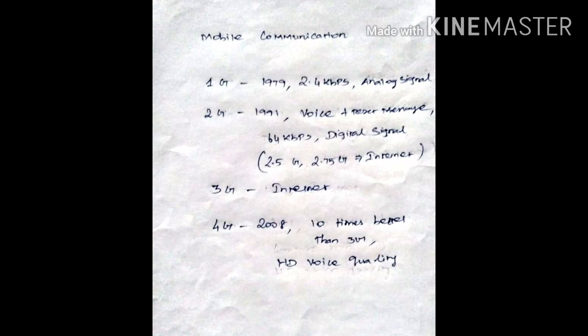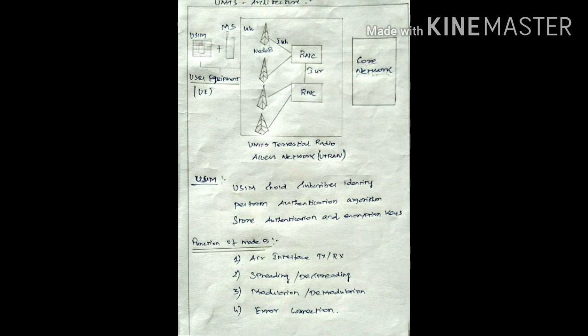Now let us move on to the topic UMTS architecture. Architecture can be divided into three major parts. The first part is the user equipment, second part is the access network, and third part is the core network. Now coming to the user equipment.